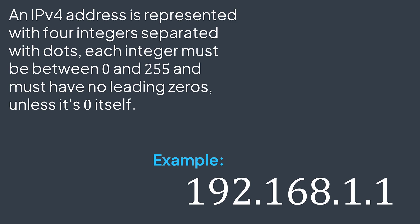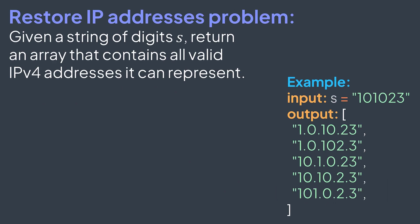An IPv4 address is represented with four integers separated by dots. Each integer must be between 0 and 255 and must have no leading zeros, unless it's 0 itself. In today's problem, we have a string of digits s, and because it doesn't have dots, it might represent multiple valid IPv4 addresses.